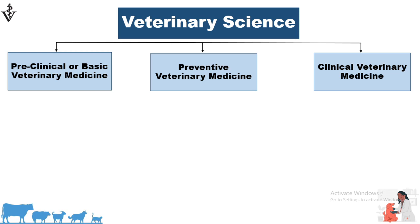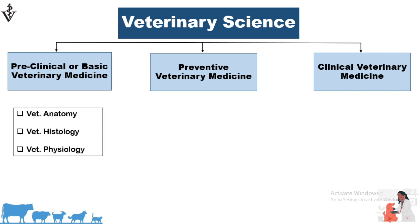Now, veterinary sciences is subdivided into three branches: number one, preclinical or basic veterinary medicine; number two, preventive veterinary medicine; and number three, clinical veterinary medicine. Preclinical or basic veterinary medicine — as its name denotes — covers the basic subjects in veterinary sciences that need to be understood before clinical studies. The subjects included are veterinary anatomy, veterinary histology, and veterinary physiology.